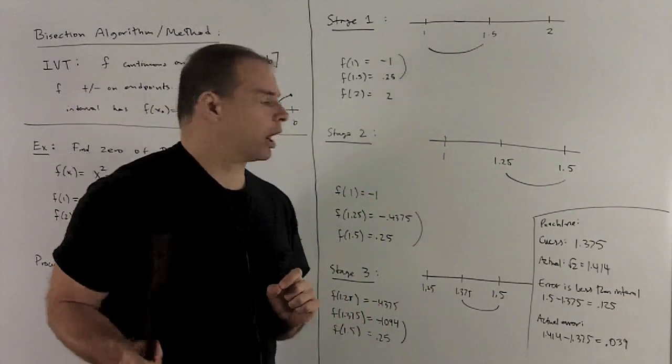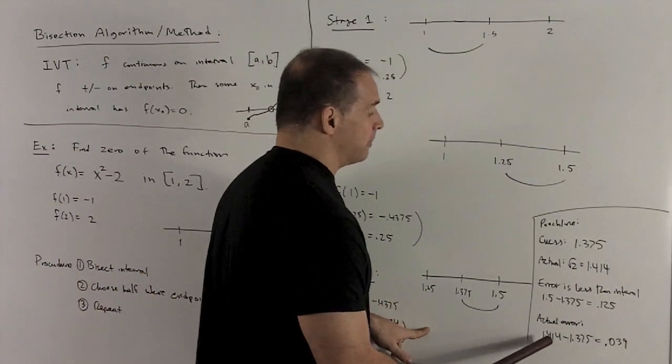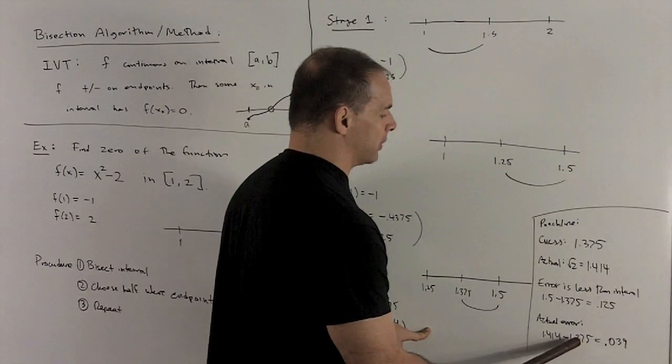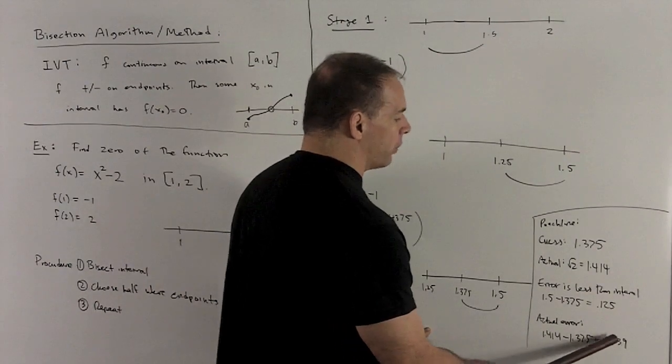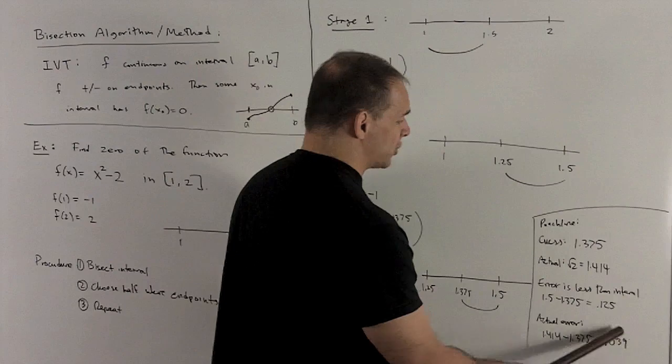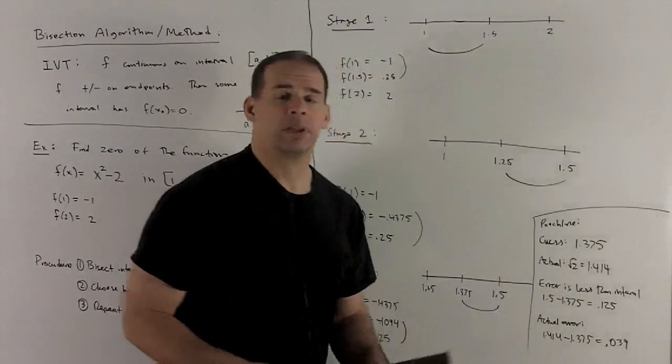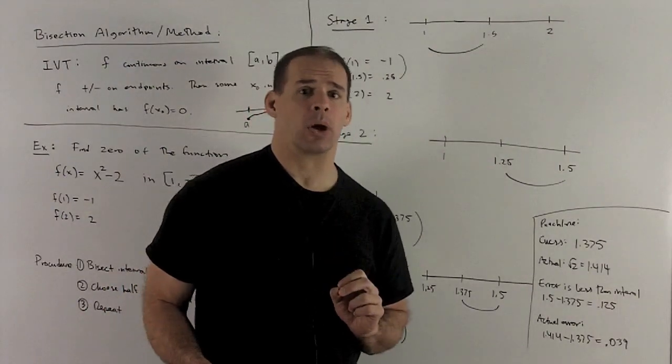What's our actual error? Our actual error is going to be, take my 1.414, which is the actual, subtract off our guess, which is 1.375. That gives you 0.039, and we notice that's going to be less than what we're getting for our bound on the error. So that's how the bisection method works.